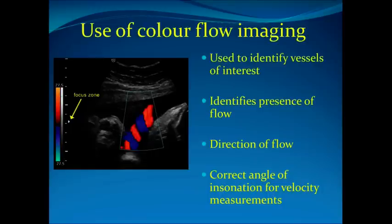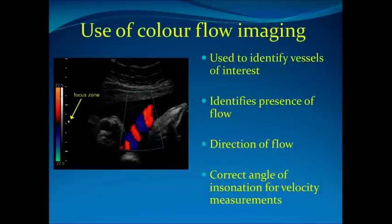We use colour flow imaging to identify the vessel of interest. It identifies the presence of flow, the direction of flow, and the correct angle of inclination for velocity measurements. We apply the colour Doppler over the B-mode image so that we can see where the flow is within the vessel that we are sampling. It also gives us an indication of where there is turbulent flow, which is a quick and easy way to detect where to sample from.